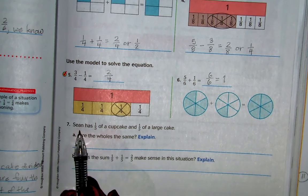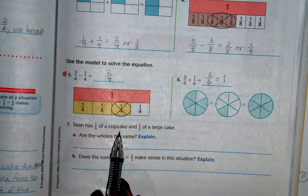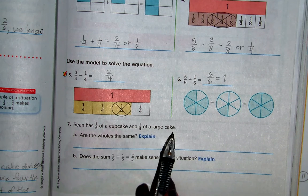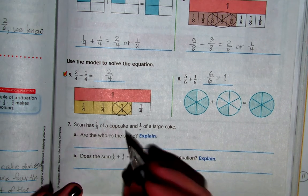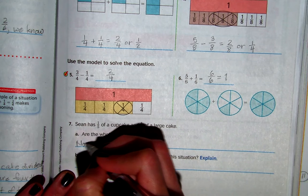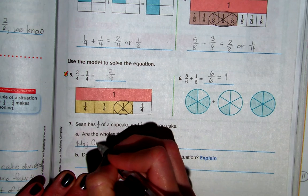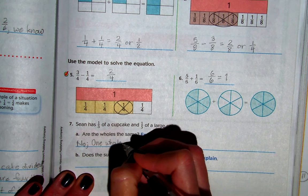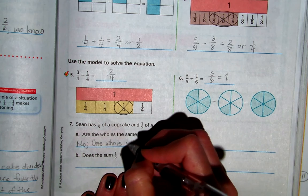Sean has 1 fifth of a cupcake and 1 fifth of a large cake. Are the wholes the same? No. So, one whole refers to a cupcake.